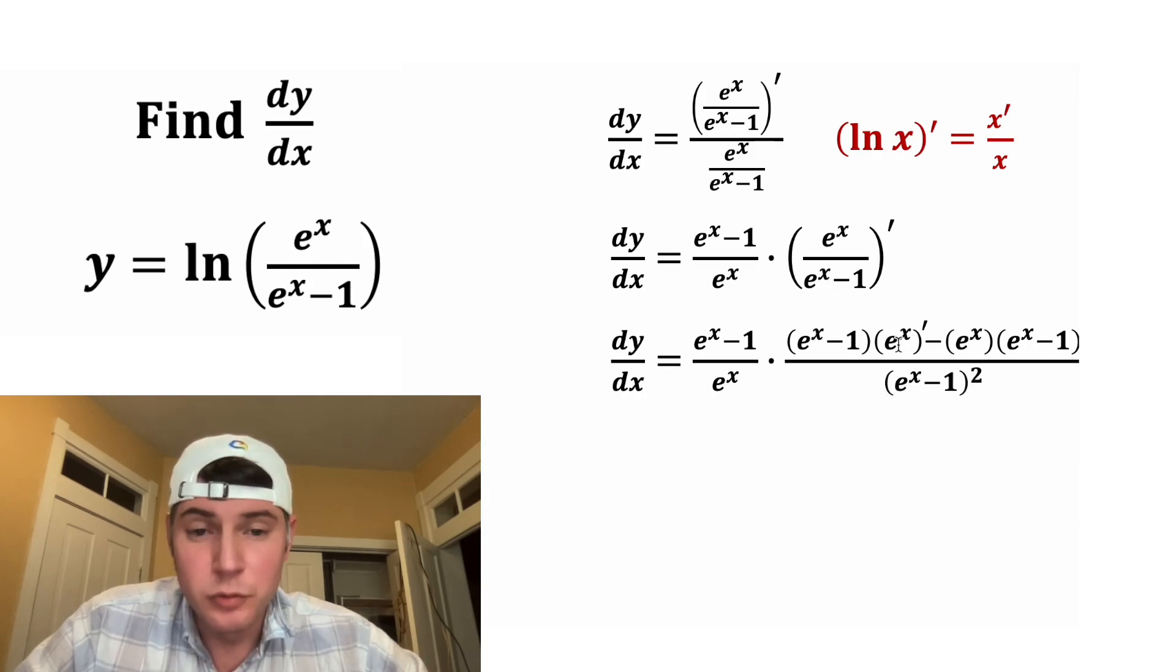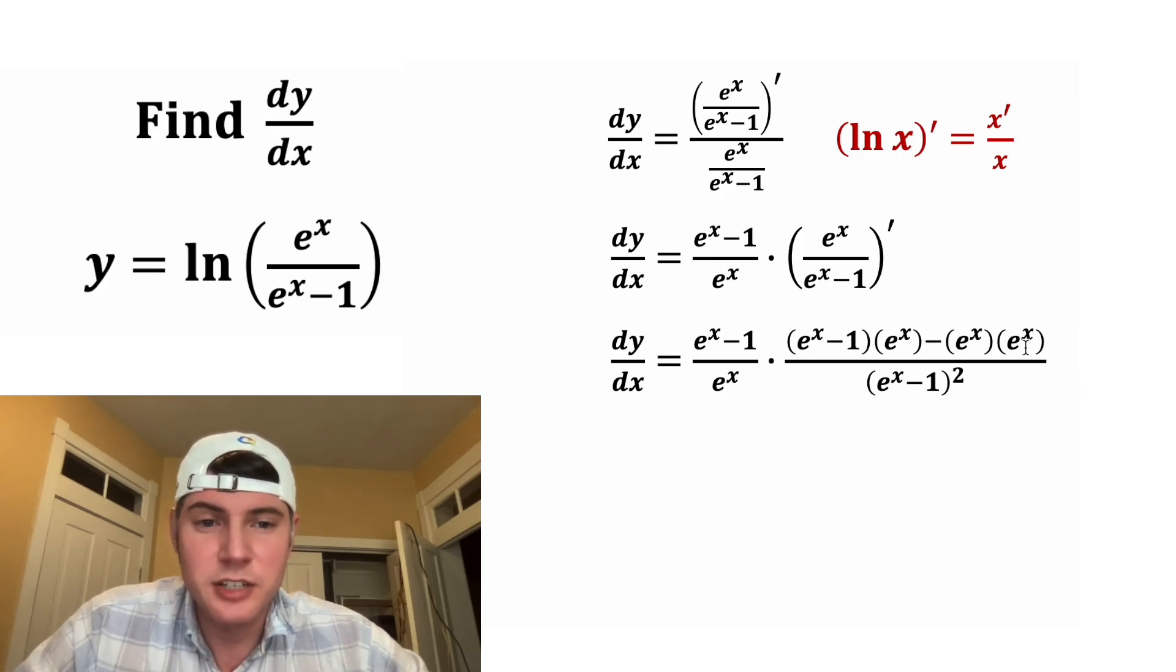And now we can clean this up. The derivative of e to the x is just e to the x, and the derivative of e to the x minus 1 is also just e to the x.